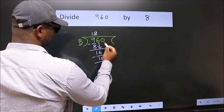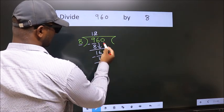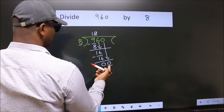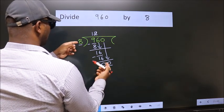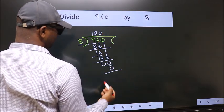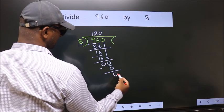After this, bring down the beside number. So, 0 down. So, 0. When do we get 0? In 8 table. 8 zeros, 0. Now, we subtract. We get 0.